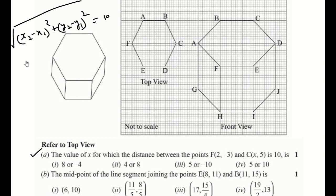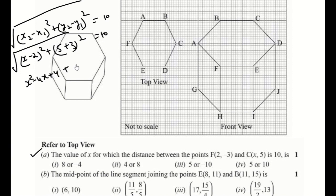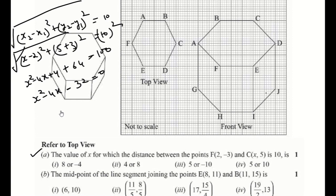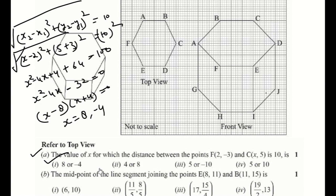We substitute the values: square root of (x minus 2) whole square plus (5 plus 3) whole square equals 10. This gives x squared minus 4x plus 4 plus 64. Squaring both sides removes the square root, giving 100. So we get x squared minus 4x, which factors as (x minus 8)(x plus 4) equals 0. Therefore x equals 8 and minus 4. So the answer is the first option: x is 8 and minus 4.